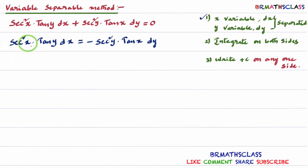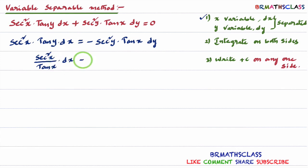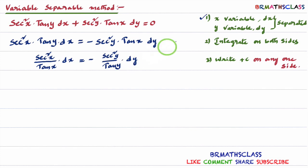I want to write all x related terms and dx at one side, and all y related terms and dy at one side. I will take this tan x to this side and this tan y to this side. You will get: secant square x divided by tan x into dx. You should always get dx in the form of into dx only. Then you take tan y to this side, and what is remaining is secant square y divided by tan y into dy. All x terms dx are at one side, all y terms dy are at one side. Step 1 is over.